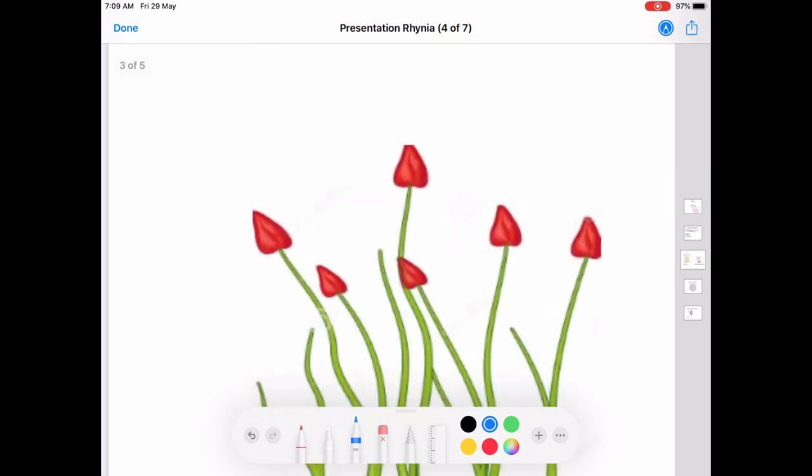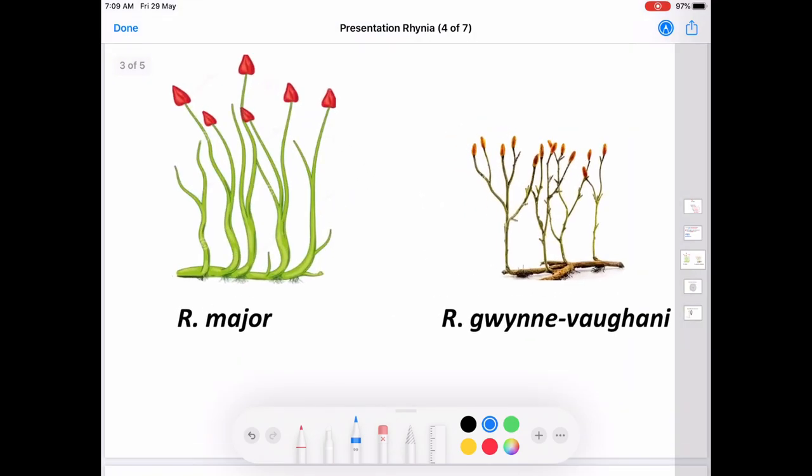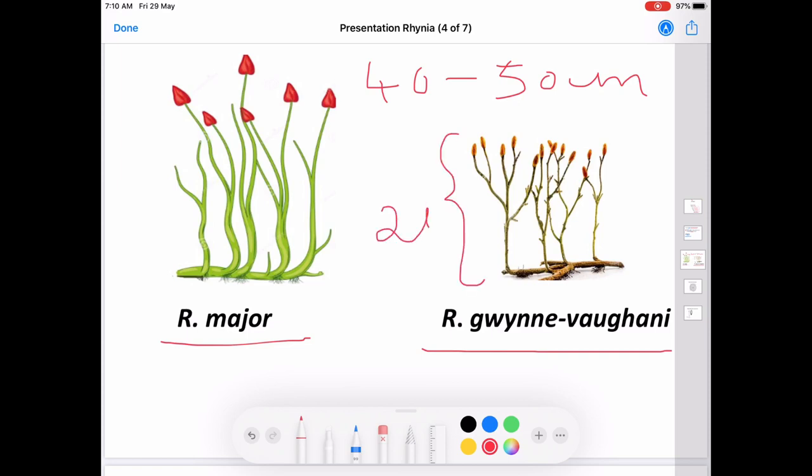Now, there are two species discovered under Rhynia: Rhynia major and Rhynia gwynne-vaughanii. The Rhynia major is quite larger in size, having 40 to 50 centimeters in height, but Rhynia gwynne-vaughanii is having only 20 centimeters in height.